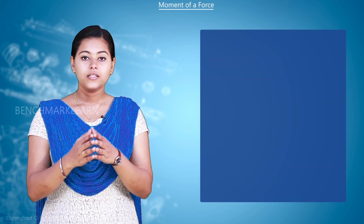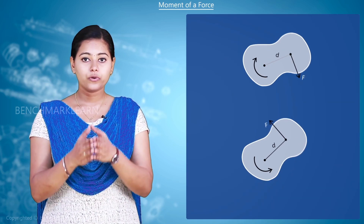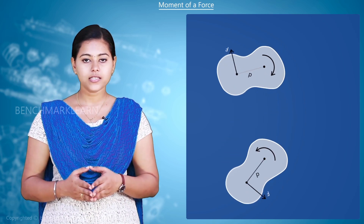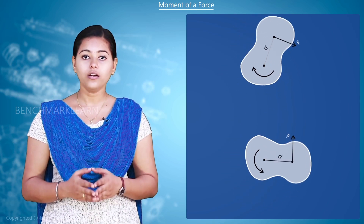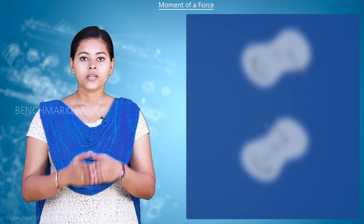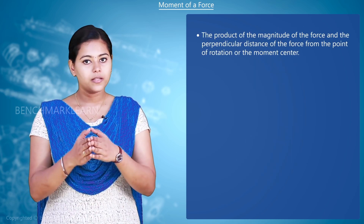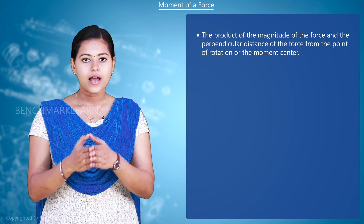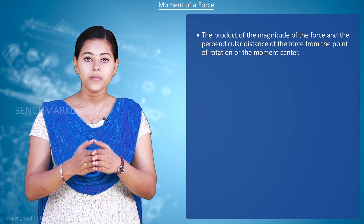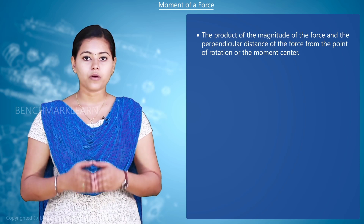The tendency of a force to produce rotation of a body about an axis or a point is called the moment of the force. It is calculated as the product of the magnitude of the force and the perpendicular distance of the force from the point of rotation, or the moment center.